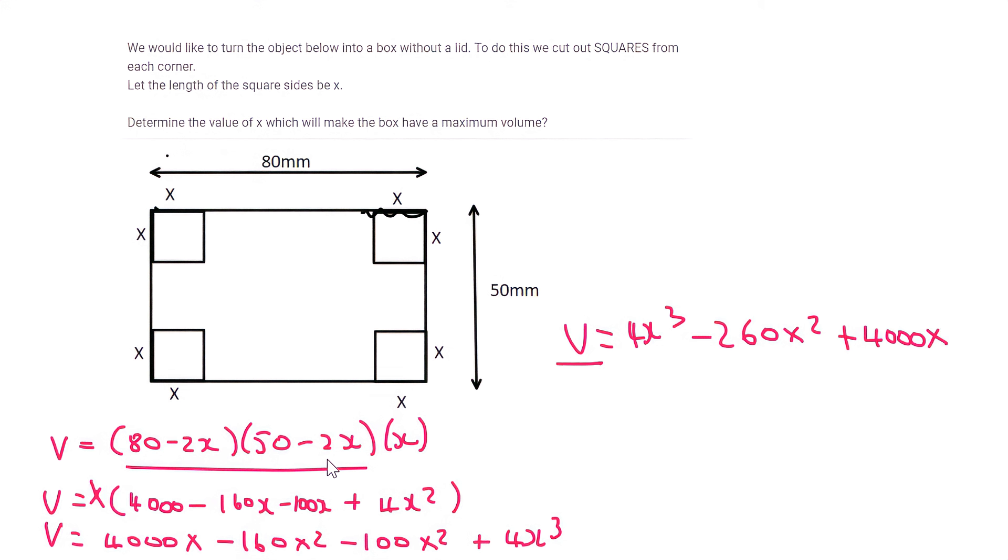Guys, now think about any type of graph. How do you find minimums and maximums? Well, it's always the first derivative equal to zero. So we're going to take the first derivative of this. Even though it's a volume, you can use calculus for anything. So we take the first derivative, which is 12x squared minus 520x plus 4000. And we want the first derivative to be zero. So we make it equal to zero. And then you solve.